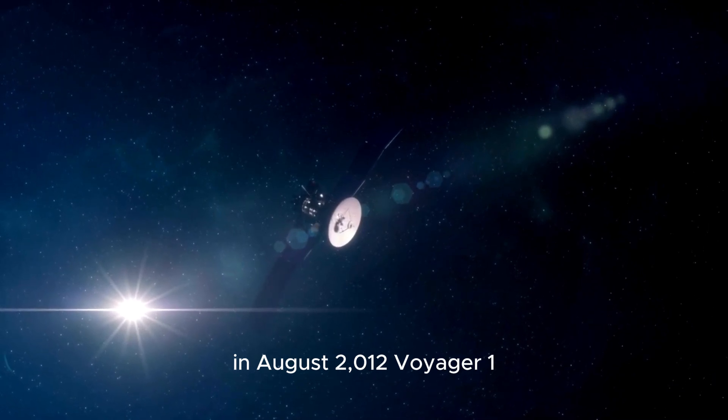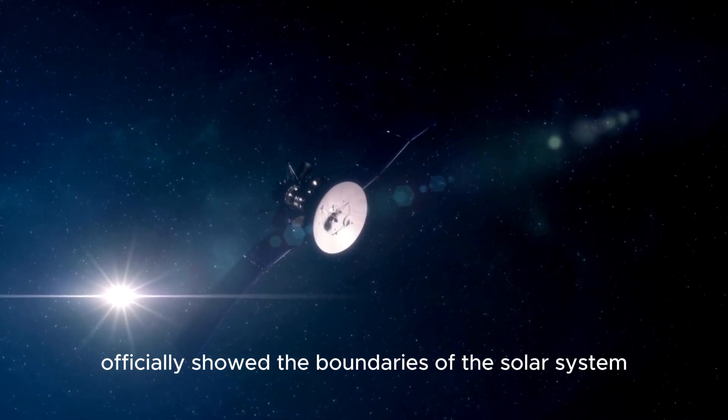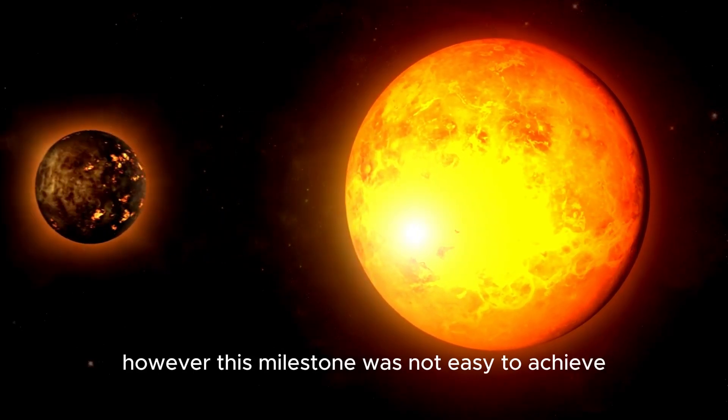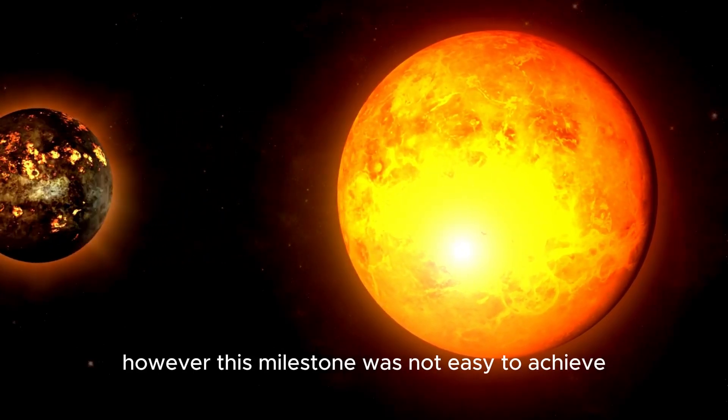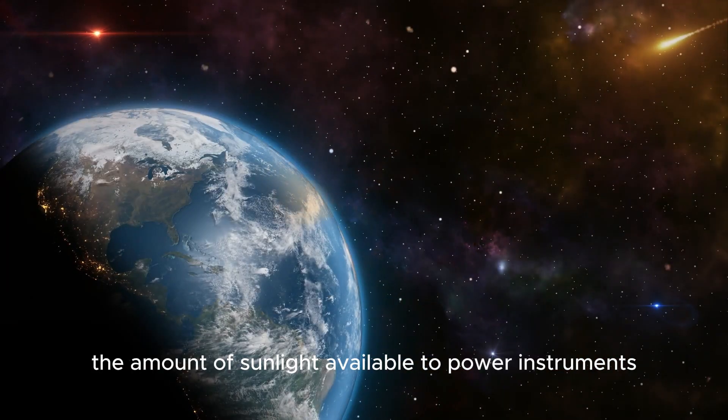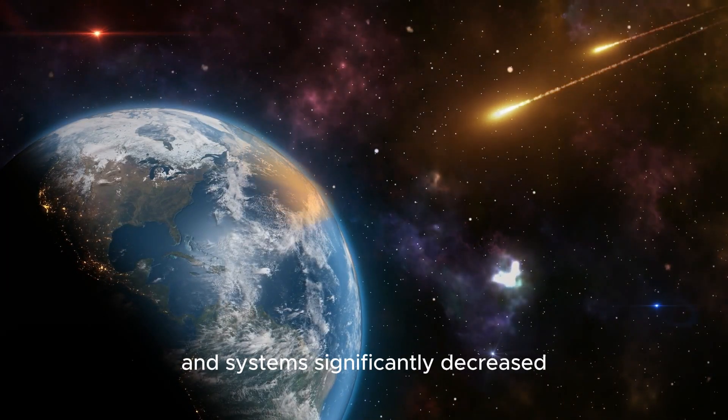In August 2012, Voyager 1 officially showed the boundaries of the solar system by crossing the heliopause. However, this milestone was not easy to achieve. As the probe moved farther away from the sun, the amount of sunlight available to power instruments and systems significantly decreased.